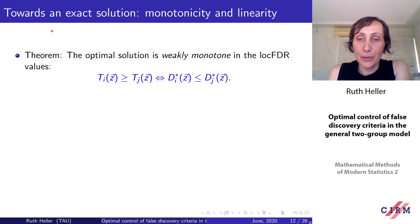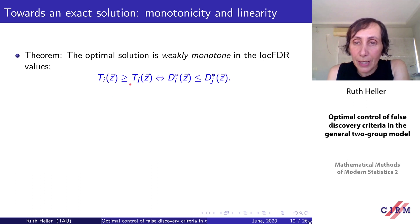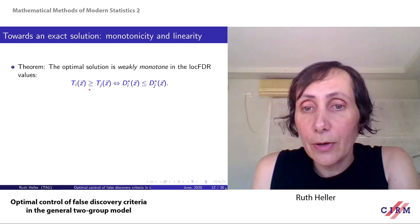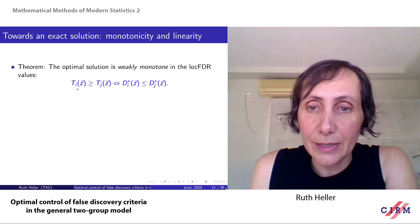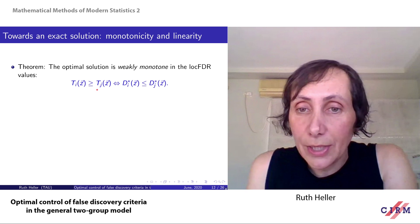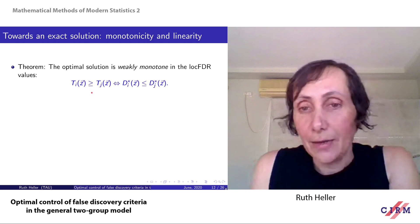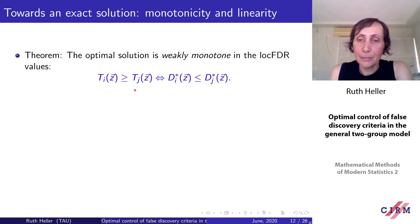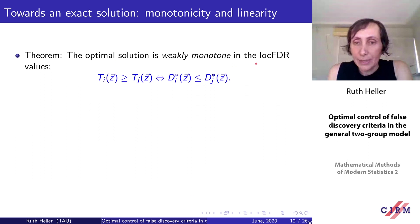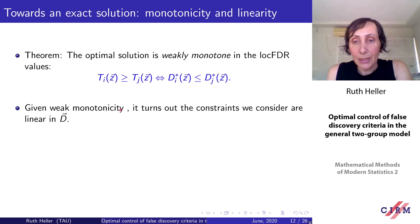We first show that the optimal solution is weakly monotone in the local FDR values: if one local FDR value is smaller than another, it will be rejected first. The proof assumes the solution is not weakly monotone, considers a policy that switches the decision for the non-monotone pair, and shows that this switch increases power and reduces error. Given weak monotonicity, the constraints become linear in the decision vector.